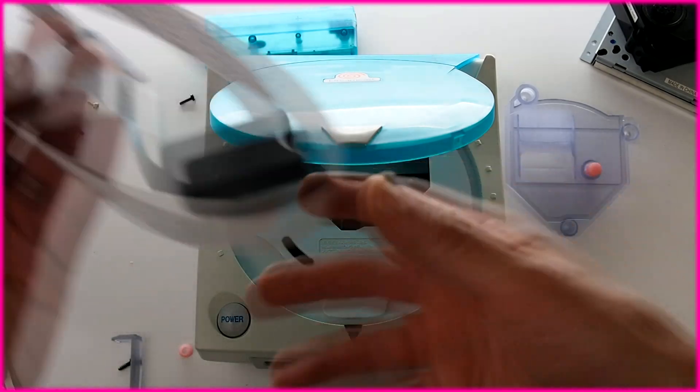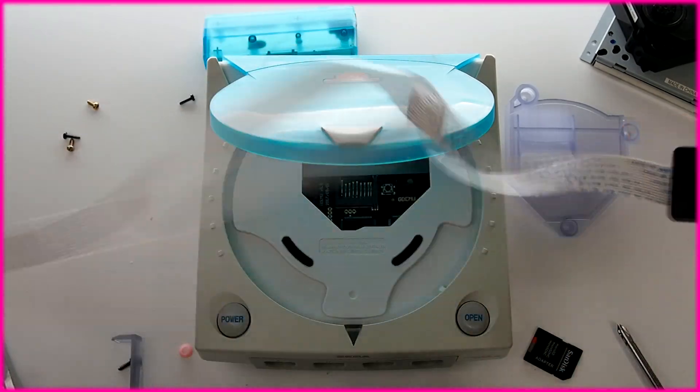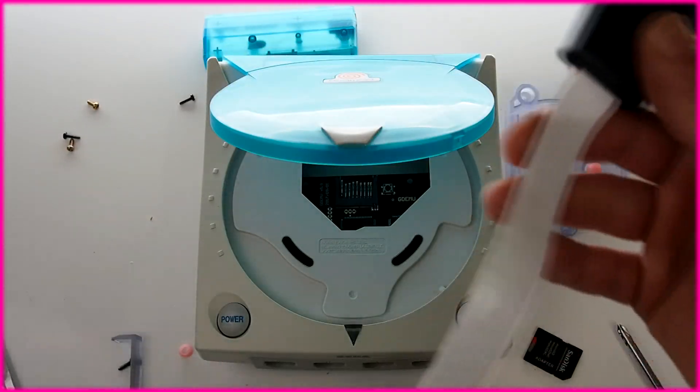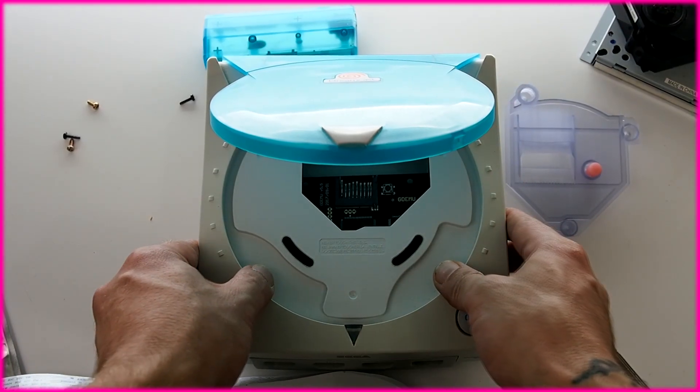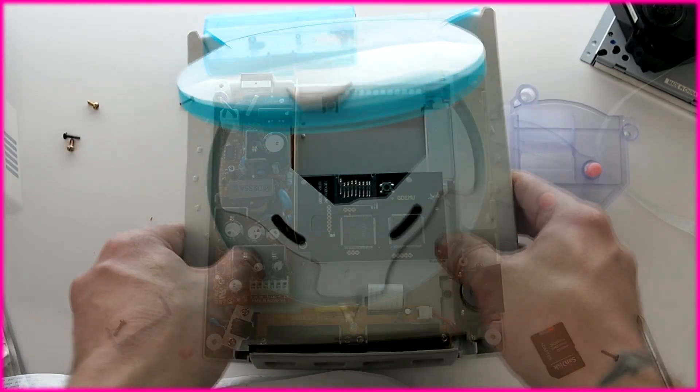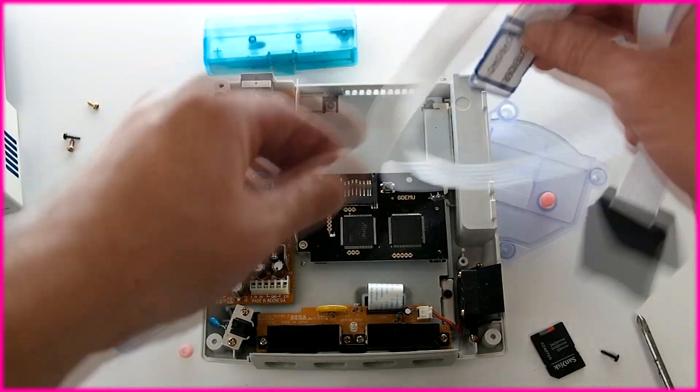So basically we have an SD card extender that will allow us to move the SD card slot to where the actual 3D printed part is. That's supposed to fit exactly in the hole and mimic how the CD drive would look in there.